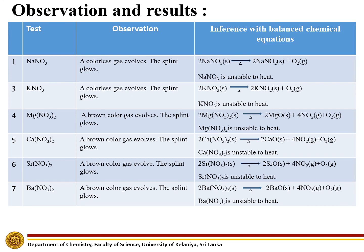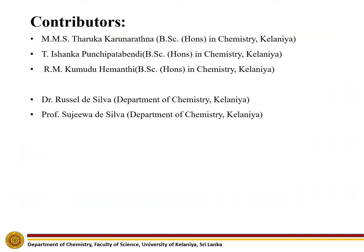But when we heat nitrates of magnesium, calcium, strontium and barium, a brown colour gas evolves due to the formation of nitrogen dioxide. Furthermore, the splint glows too, meaning oxygen is also emitted. So, these nitrates are unstable to heat.